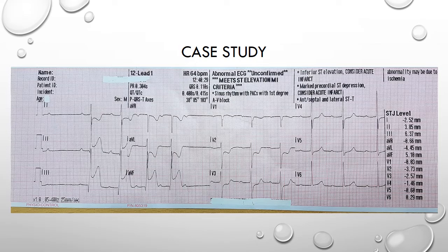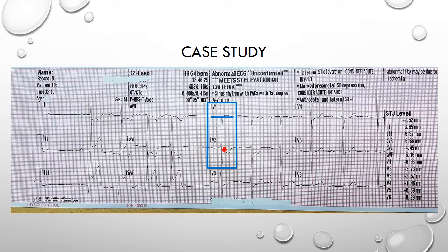Then we look to see what suggests right ventricular involvement. In patients presenting with inferior STEMI, an isoelectric ST segment or ST elevation in V1 together with ST depression in V2 is highly suggestive of RVMI. Again, we have those findings in this ECG. Given that the blood supply to the right ventricle comes from the right marginal artery, this further supports the RCA as the culprit and indicates a proximal occlusion.